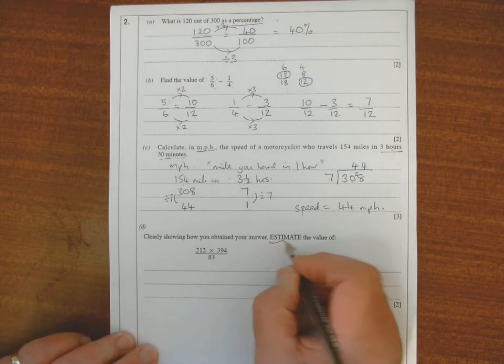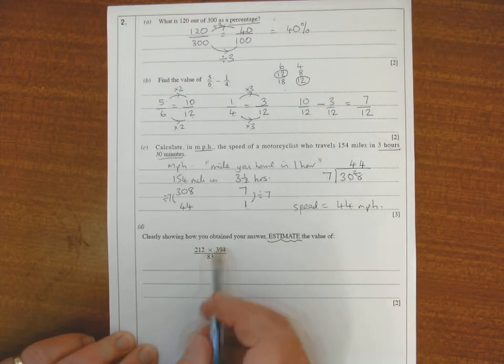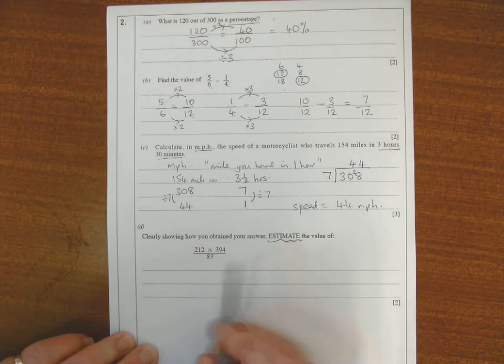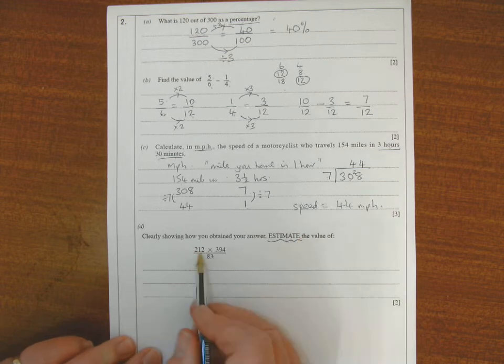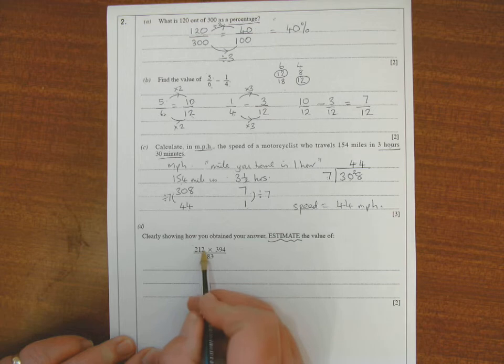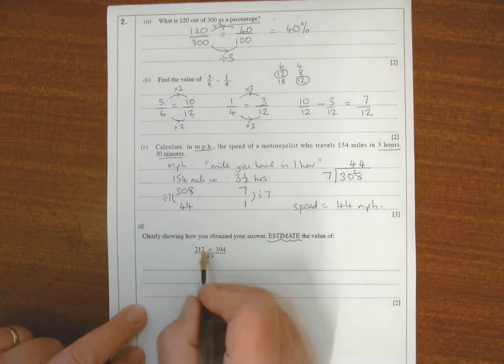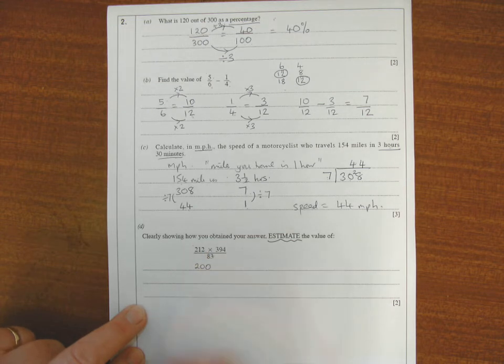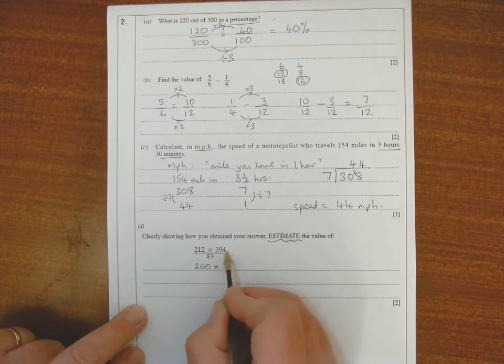This is an estimate question - you're not expected to carry out these big calculations. First of all we need to change these numbers so that I'm only seeing one non-zero digit in each of the numbers. So 212, that's between 200 and 300 and it's closer to 200, so I'll be writing that as 200.